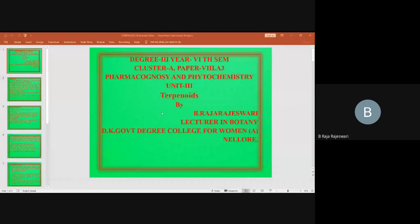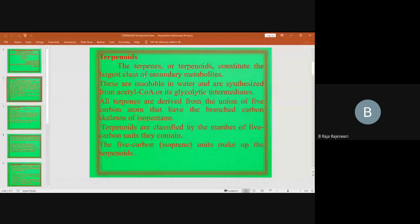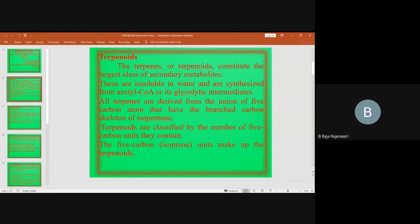Today we are going to learn about terpenoids. Terpenoids constitute the largest class of secondary metabolites. These are insoluble in water and are synthesized from Acetyl Coenzyme A or its glycolytic intermediates.